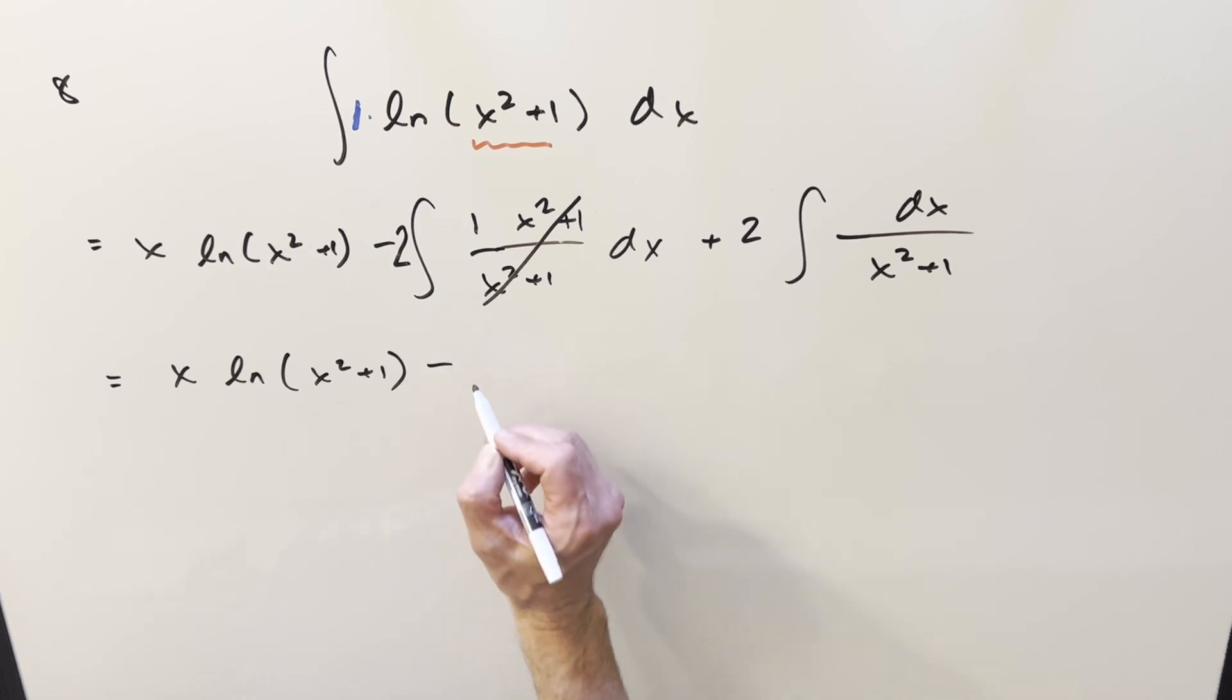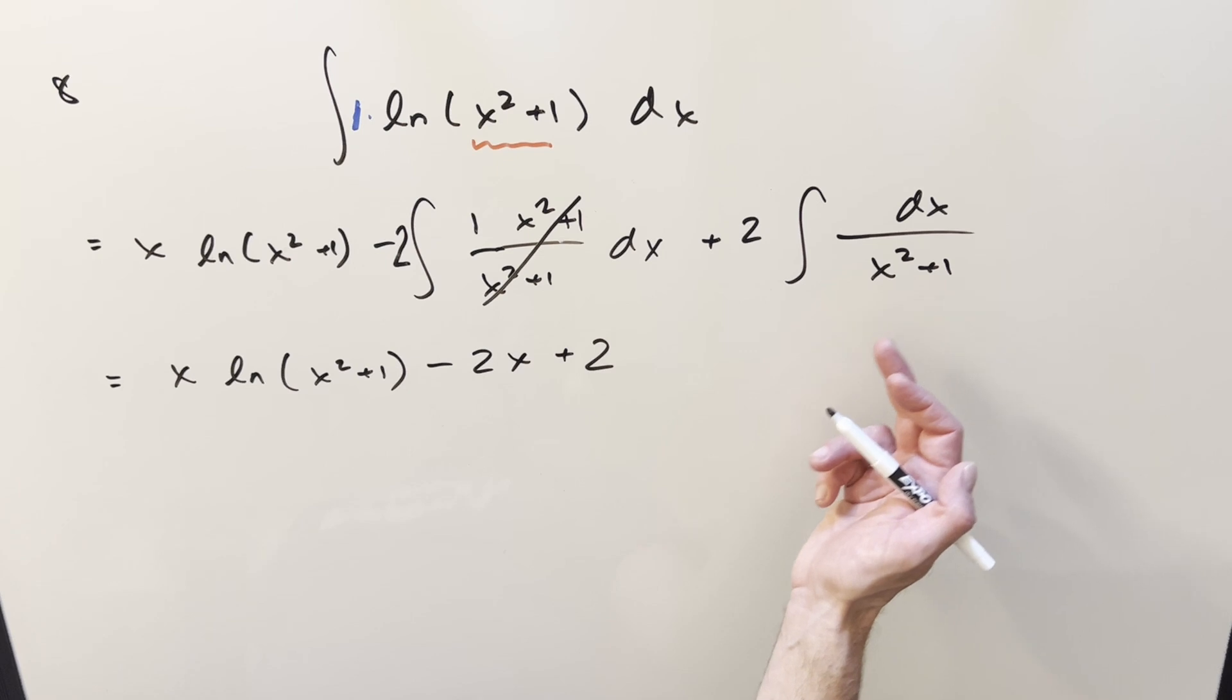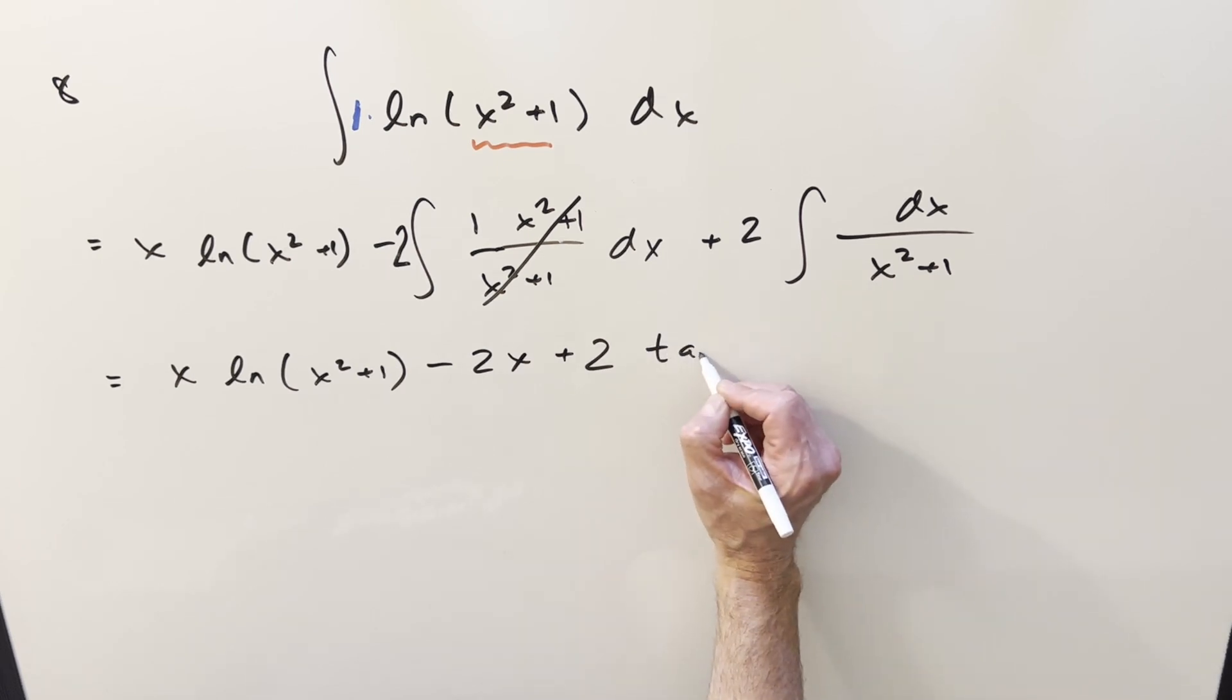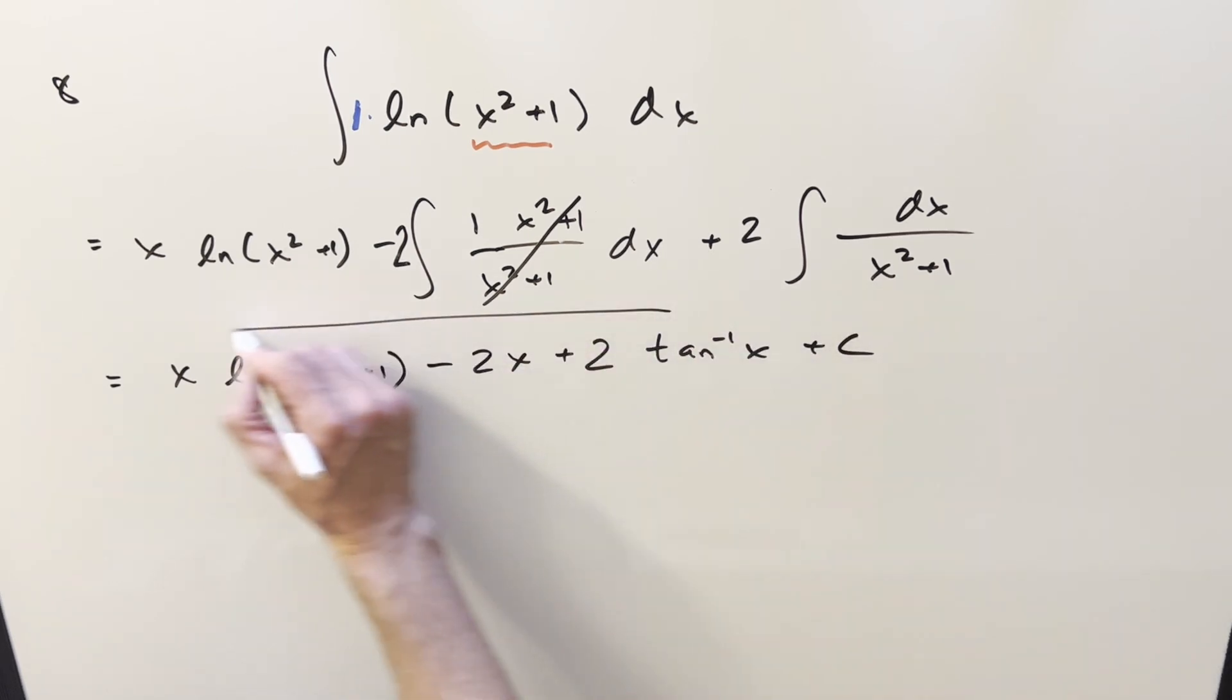Here, integrating 1, that's just going to be an x. So we have minus 2x plus 2. Integral here of 1 over x squared plus 1. That's just going to be arc tan of x. Add a plus c, and that's it.